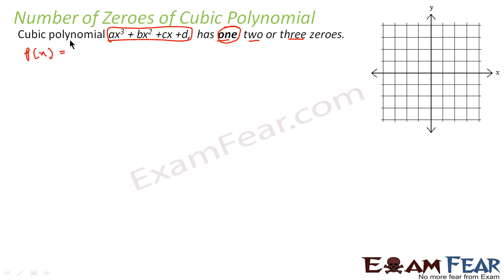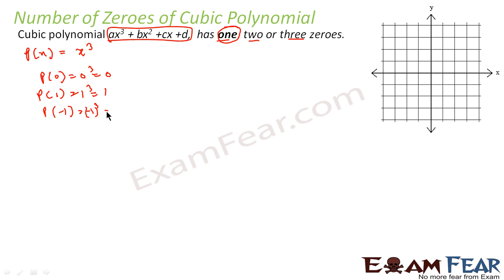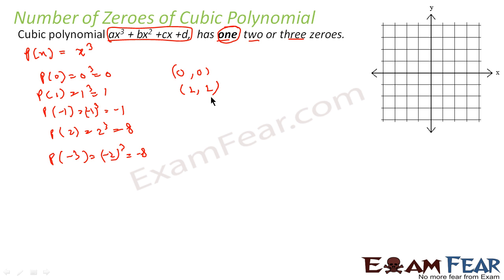Let's take the cubic polynomial function px equal to x³, where a is equal to 1 and b, c, d are zero. For this function, let's plot the graph. p(0) = 0, p(1) = 1, p(-1) = -1, p(2) = 8, p(-2) = -8. With these points, we can plot the graph: (0,0), (1,1), (-1,-1), (2,8), (-2,-8).